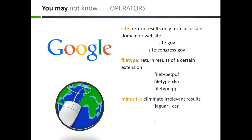Using a dash works like a minus sign. This signifies what words should not appear in any of your results. Remember our jaguar example earlier in the advanced search? This works the same way. If I'm looking for information about a jaguar animal and I don't want any results about the car company Jaguar, then I would search for 'jaguar -car' with no space between the minus and car.